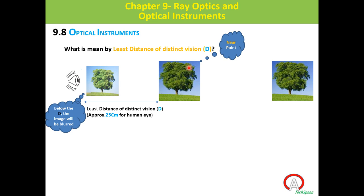If an object is kept at distance D from the eye, we call this position the near point. If I move the object farther from the eye, I can still see it — that is the far point. In this study, we will take the far point as infinity, since objects at long distances like 100 meters or 1 kilometer behave as if at infinity. So near point is D and far point is infinity.